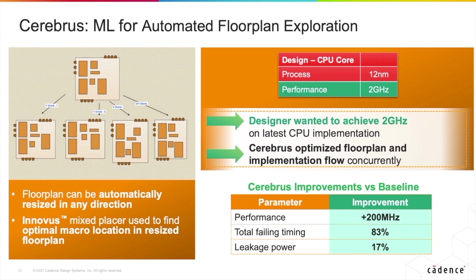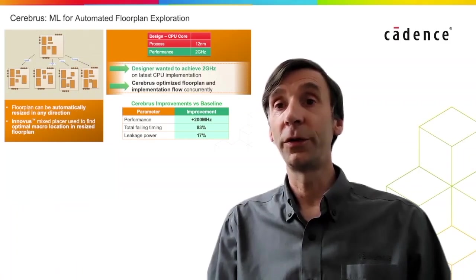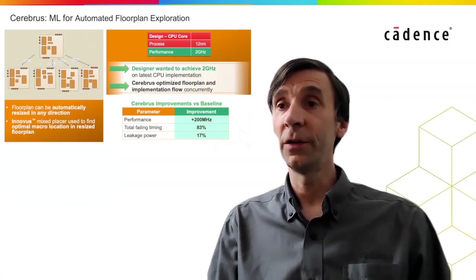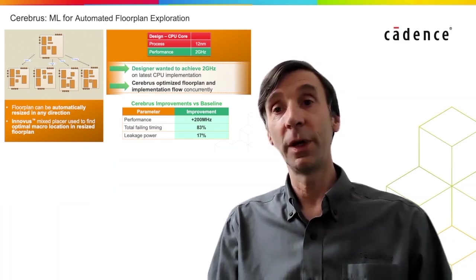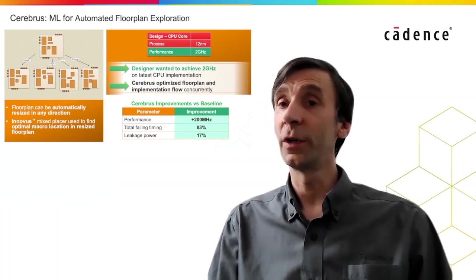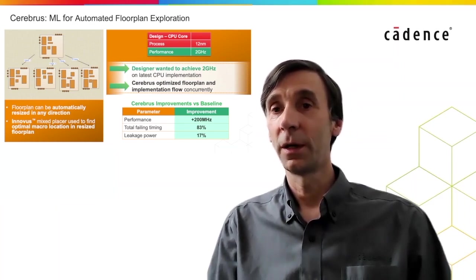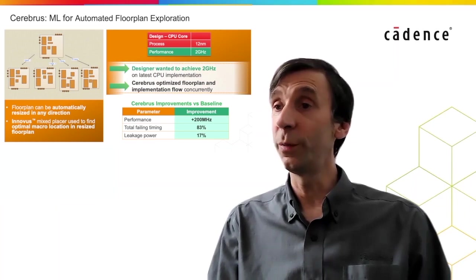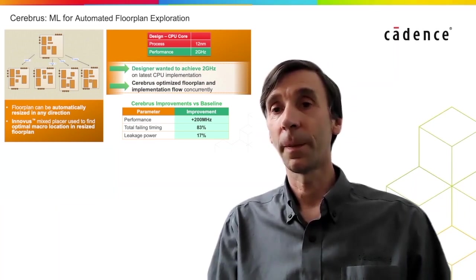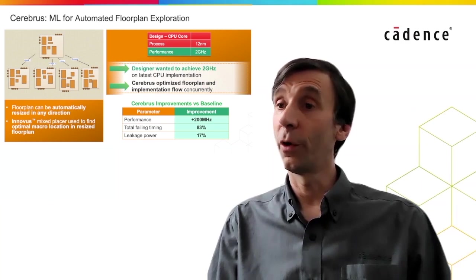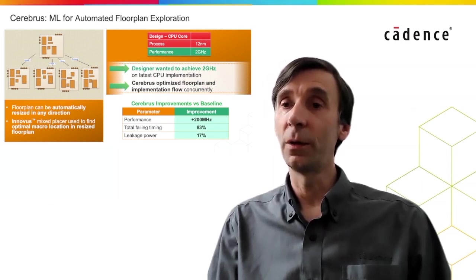Another interesting example is how Cerebrus can use built-in systems to do high-level design optimization. This is a 12nm, 2GHz CPU design, and the customer wanted to use Cerebrus to optimize the floor plan and implementation flow for better power and performance. Using the floor plan optimization system, Cerebrus was able to dynamically change the size and aspect ratio of the floor plan, and use the INNOVUS MixPlacer technology to relocate the macros in the resized floor plan, completely automatically. This resulted in over 200MHz better CPU performance, with a good reduction in leakage power. Cerebrus was able to come up with an optimized floor plan much more quickly than a manual iterative approach could achieve.